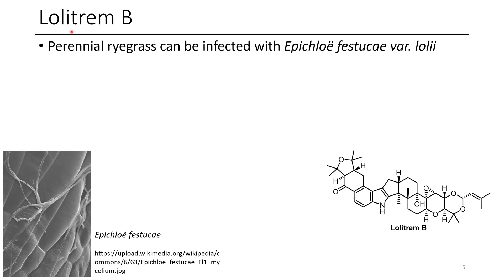The next compound is Lolitrem B. Perennial ryegrass can be infected with this very specific fungus. Here we can see a scanning electron microscope image of the fungus and the structure of the compound, which has quite a complicated motif — ten rings in one molecule, which is quite impressive.